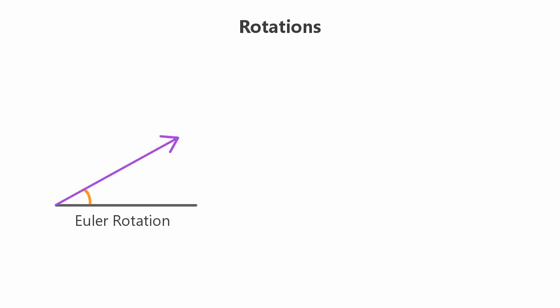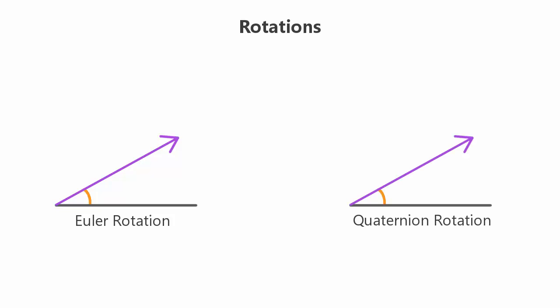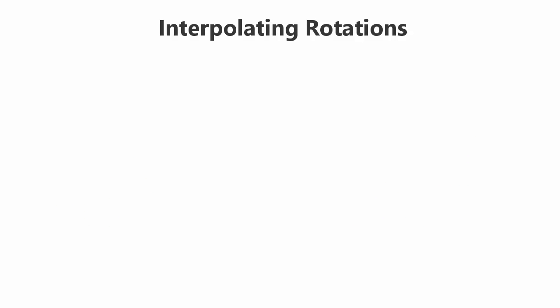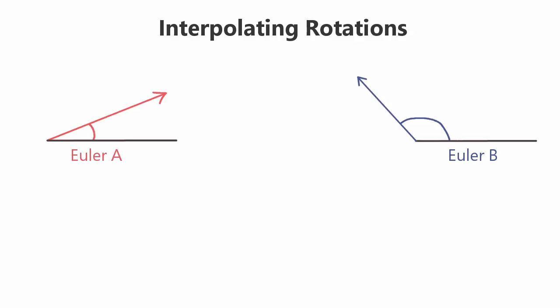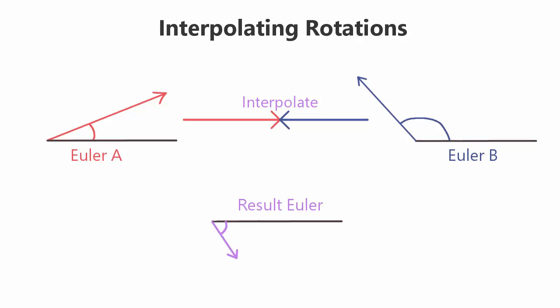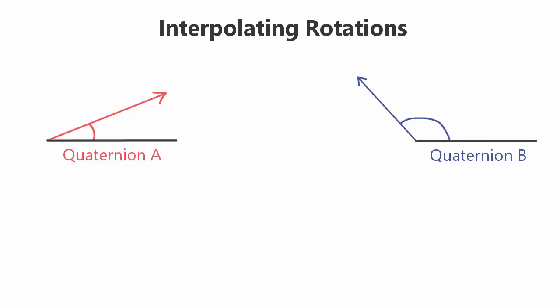Quaternions are simply another way of representing a rotation, just like Euler rotations that we've used in other tutorials, but we can represent the same three-dimensional rotations in quaternion format instead. The reason why we use quaternions here instead of Euler rotations is because it's much easier to interpolate between rotations when they're represented as quaternions. Interpolating between two Euler rotations doesn't really work — if you try to linearly interpolate each of the three rotation values, you often won't end up with the expected results. Interpolating between two quaternion rotations, however, is pretty simple and gives correct-looking results.